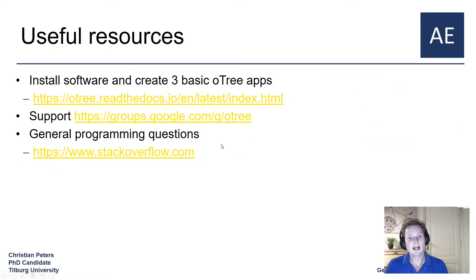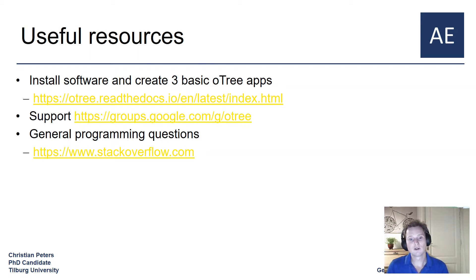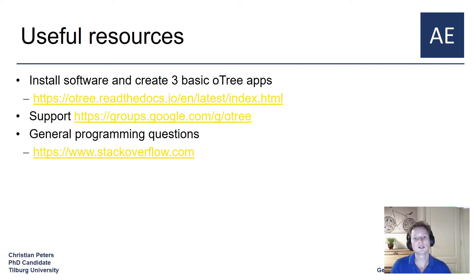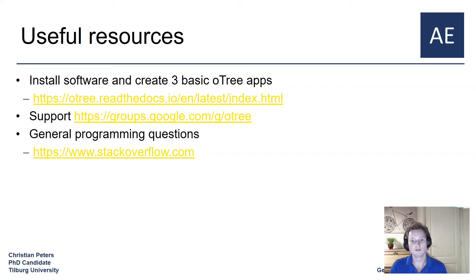So how to find help when you run into trouble? Solving programming problems on your own is easier than you might think. Python and also oTree tend to give error messages that can easily be found by using a Google search. Often someone else has already encountered the same programming problem and it has been resolved. This helped us especially — just Google the error and see what is on the web.